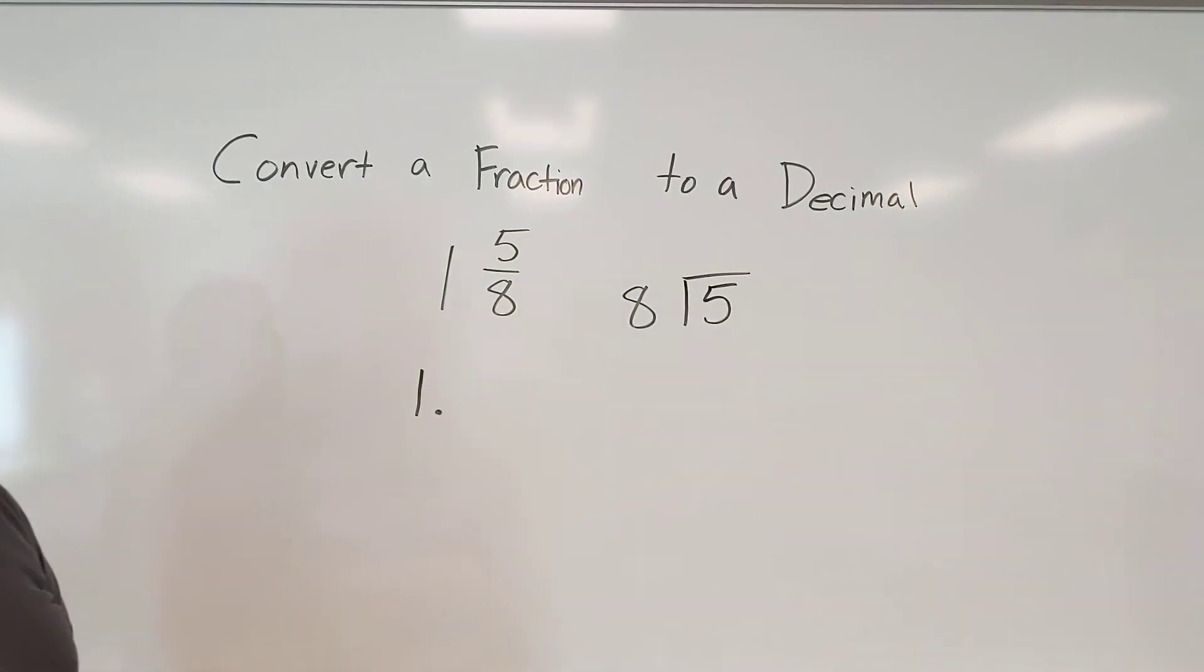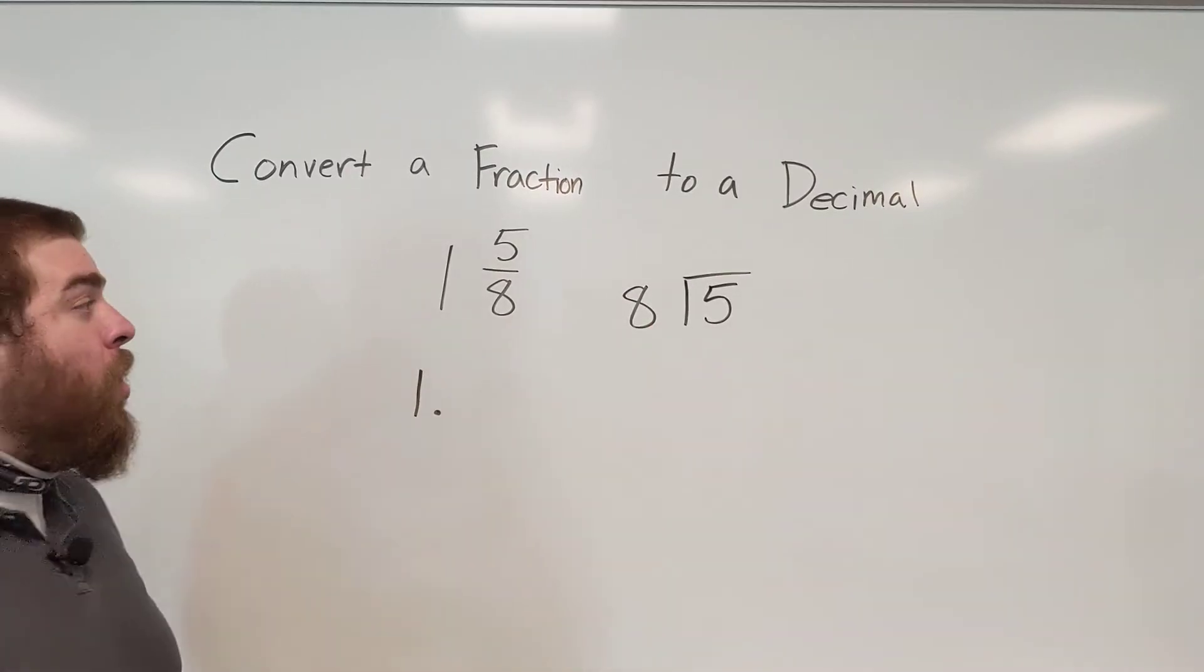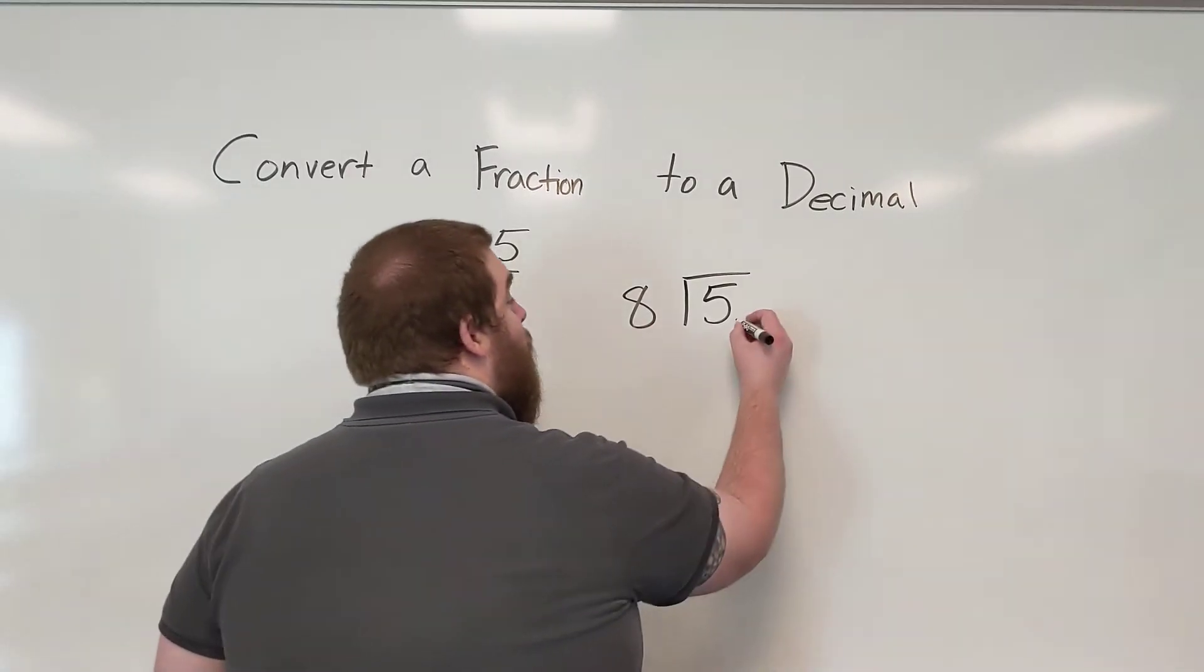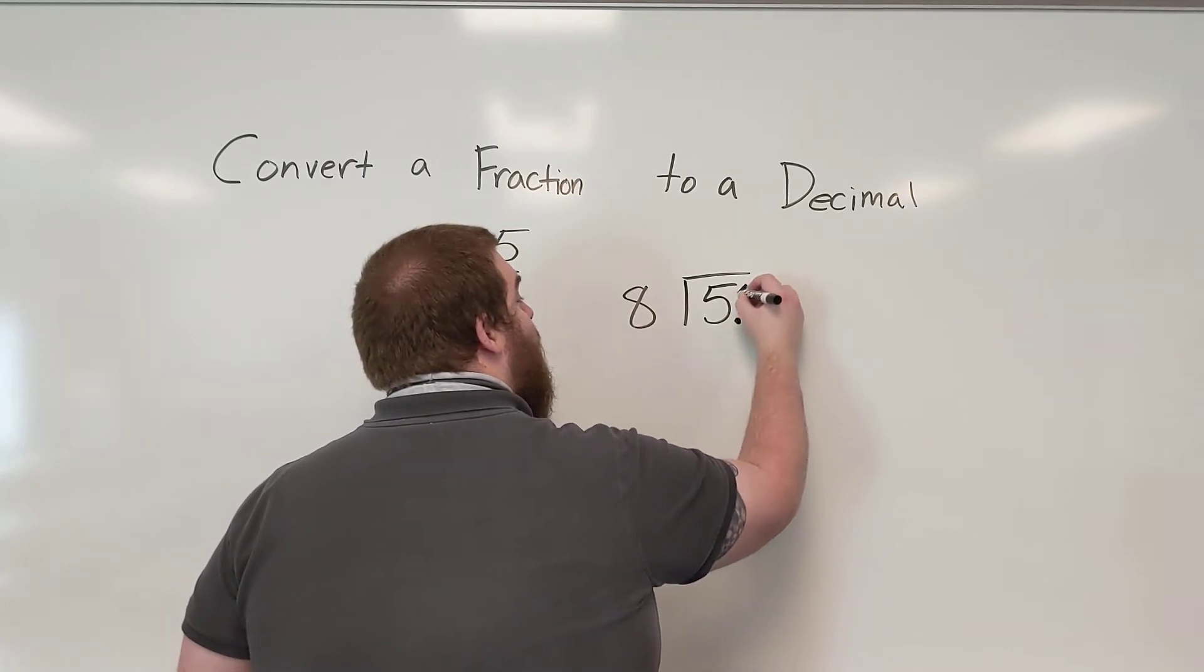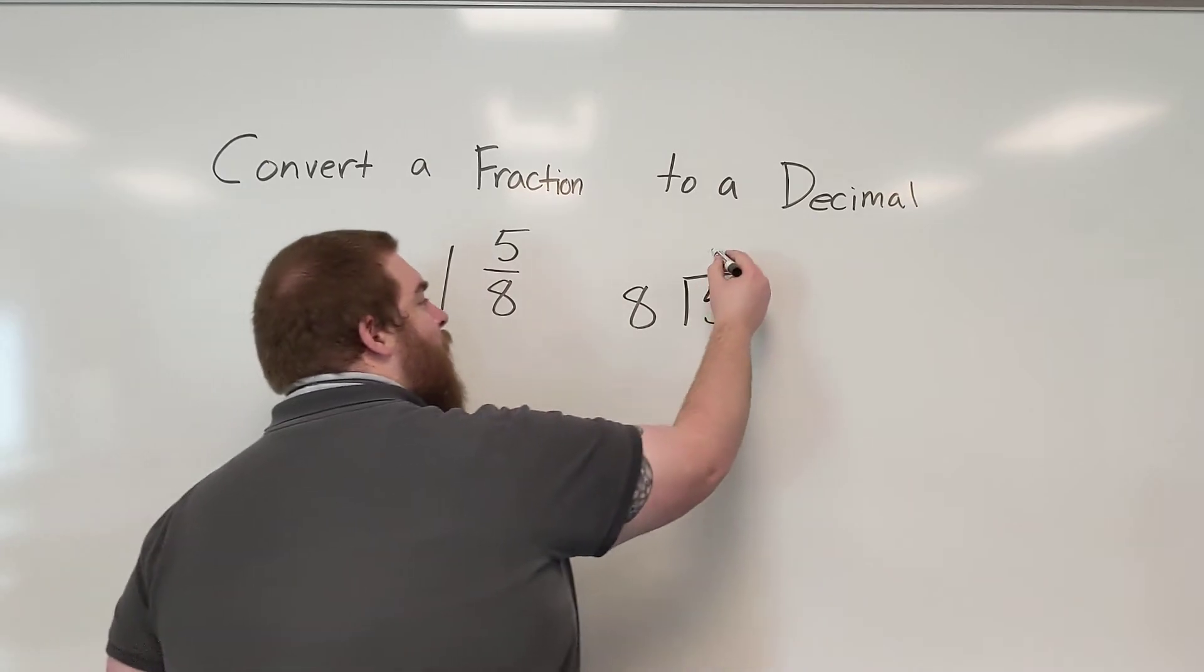So when we're dividing, top in bottom out, 5 divided by 8. With this, now we look and see can 8 go into 5? No. So what we need to do here is place a decimal point at the end of our 5 and bring it straight up.